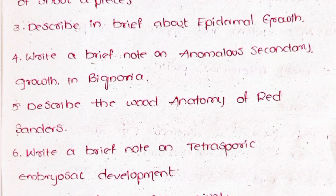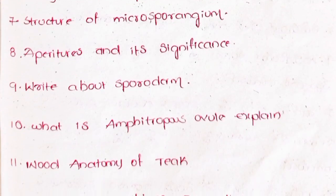6. Write a brief note on tetrasporic embryo sac development. 7. Structure of Microsporangium. 8. Tapetum and its significance. 9. Write about sporoderm. 10. What is Amphitropous ovule? Explain.